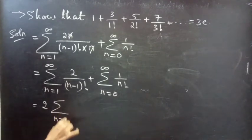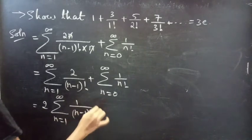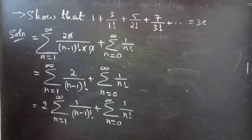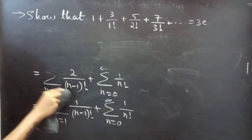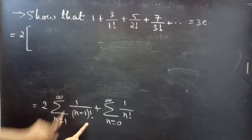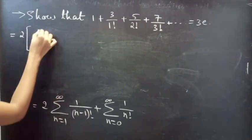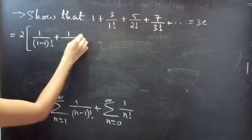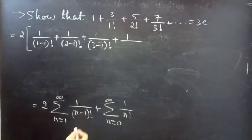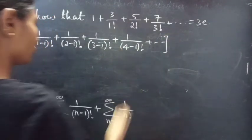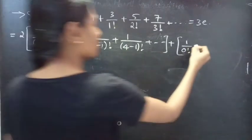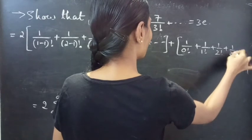Taking the constant 2 outside, we get 2 times summation n=1 to infinity of 1/(n-1)!. Expanding for n=1 to infinity: for n=1, 1/(1-1)! = 1/0!; for n=2, 1/1!; for n=3, 1/2!; for n=4, 1/3!; and so on. So the first sum expands as 1/0! + 1/1! + 1/2! + 1/3! + ...